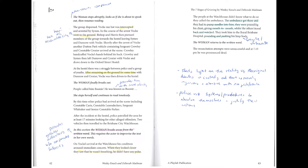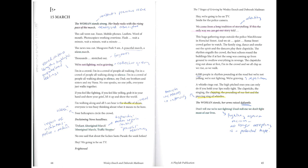In this section the woman breaks away from the written word, improvising in her own words. On Vocky's arrival at the watch house, his condition aroused immediate concern. When they looked closer, they saw that he wasn't breathing, he didn't have any pulse. The people at the watch house didn't know what to do, so they called an ambulance. The ambulance got there and they had to pump needles into him — pounding his chest, giving mouth to mouth — while the others stood back and watched. They took him to Royal Brisbane Hospital. The resuscitation attempts were unsuccessful, and at 7:13pm he was pronounced dead.